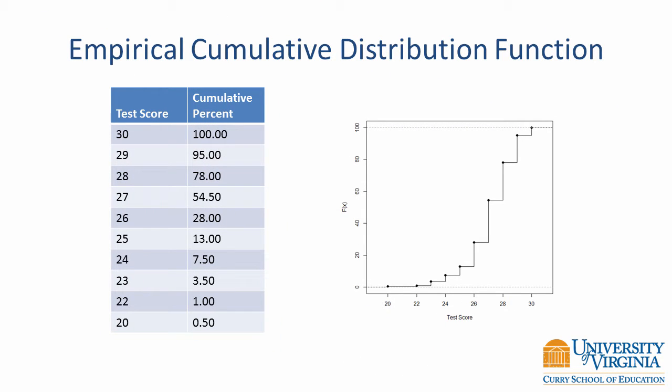If we plot the cumulative percentage for each unique test score, we obtain the Empirical Cumulative Distribution function, or ECDF. The ECDF is usually presented with proportions on the y-axis, but here I am using percentages. The black dots in the figure correspond to the information in the table. Notice how the ECDF jumps or has a step at each unique test score. The size of the step is the percentage of examinees with a particular score. An ECDF provides an empirical estimate of the cumulative distribution function, but other estimates are also possible.